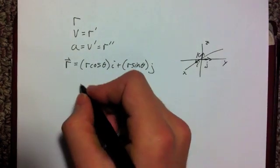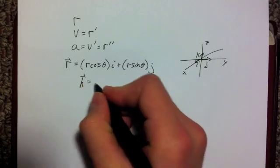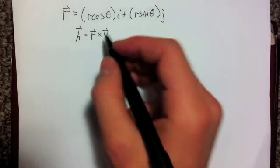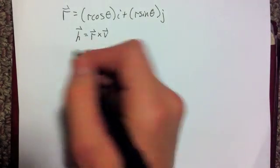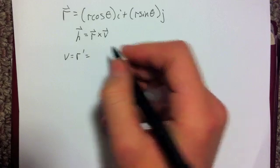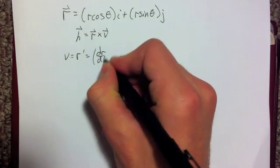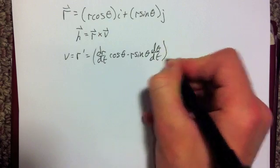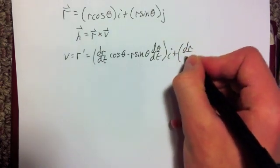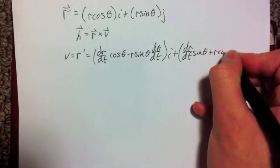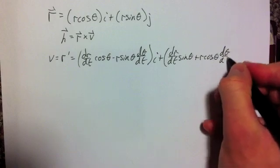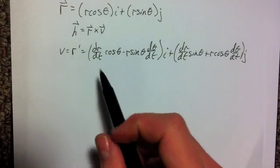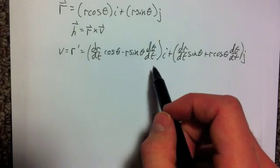From the first law, we know that the vector h is equivalent to the position vector cross the velocity vector. Before we take this cross product, we'll have to find v in terms of polar coordinates. As we said earlier, v is equal to r-prime, so the derivative of r will be dr/dt cos θ minus r sin θ dθ/dt in the i-direction, plus dr/dt sin θ plus r cos θ dθ/dt in the j-hat direction. These dr/dt's and dθ/dt's come as a result of the radius and the angle both being dependent on time.